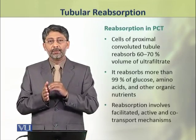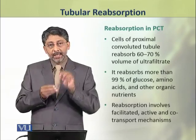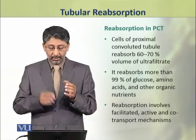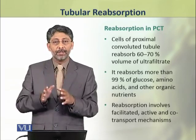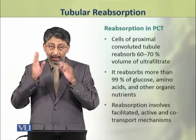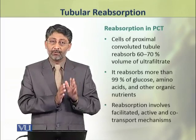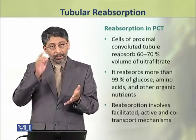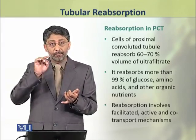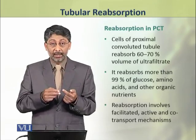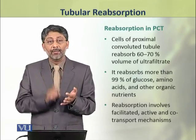First we shall discuss reabsorption in the proximal convoluted tubule. The cells of the proximal convoluted tubule reabsorb about 60 to 70 percent of the volume of the ultrafiltrate. یعنی کہ جو ultrafiltrate ہے اس کا تقریباً 60 سے 70 فیصد حصہ proximal convoluted tubule میں reabsorbed ہو جاتا ہے۔ But ratio-wise, this portion reabsorbs about 99 percent or even more than 99 percent of glucose, amino acids, and other organic nutrients.